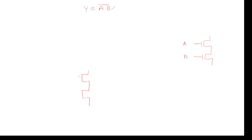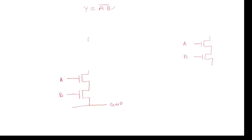A and B should be N-series. I am assuming this is input A and this is input B. Of course, supply is required — VDD and ground. Now, using NMOS technology, the pull-up transistor is also NMOS, but they are using depletion-mode NMOS. The depletion-mode symbol has a dotted line, and the gate is connected to the source. This is the output node Vout.